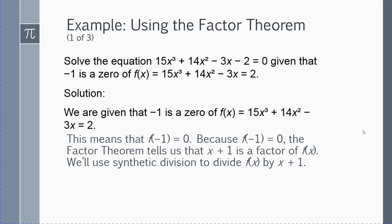Here's the first example: solve 15x cubed plus 14x squared minus 3x minus 2 equals 0, given that negative 1 is a zero of f of x. That means one solution is x equals negative 1. I want to use this to help find the other solutions. This means f of negative 1 is equal to 0.